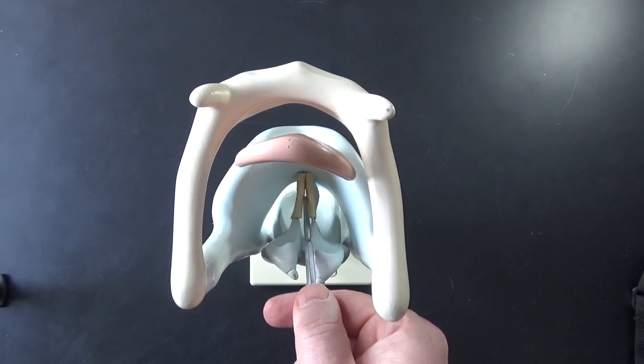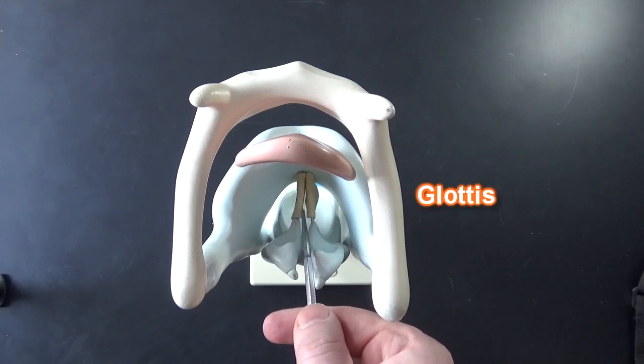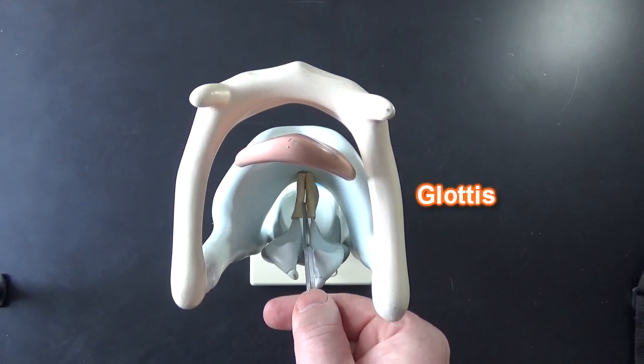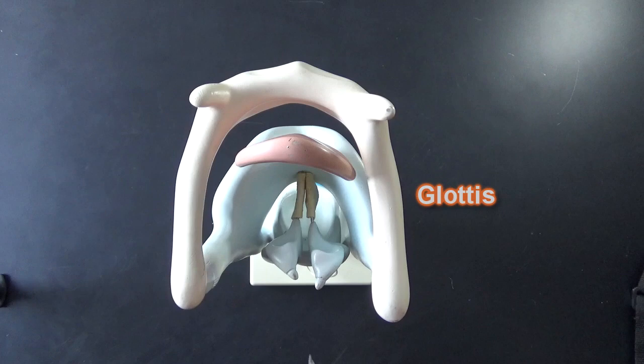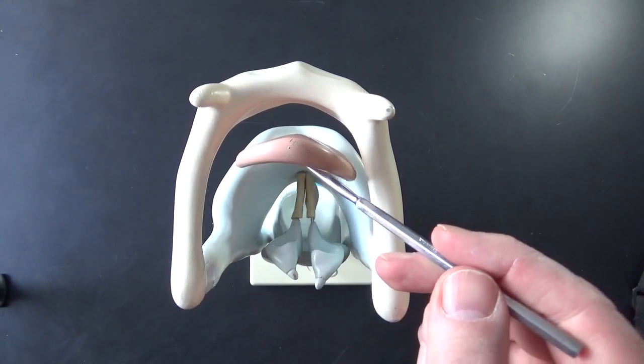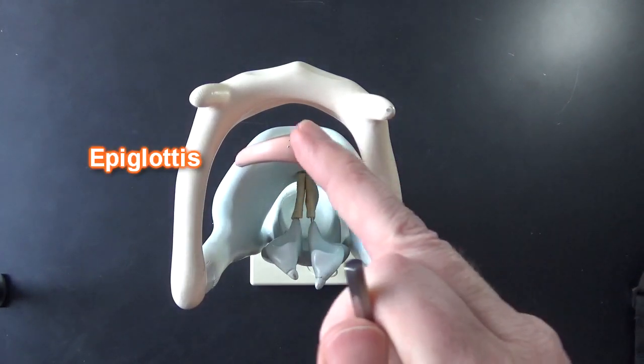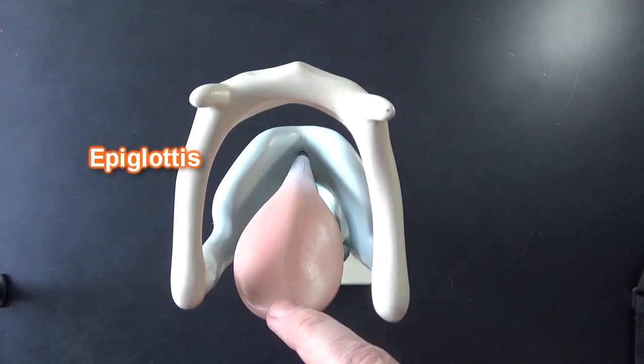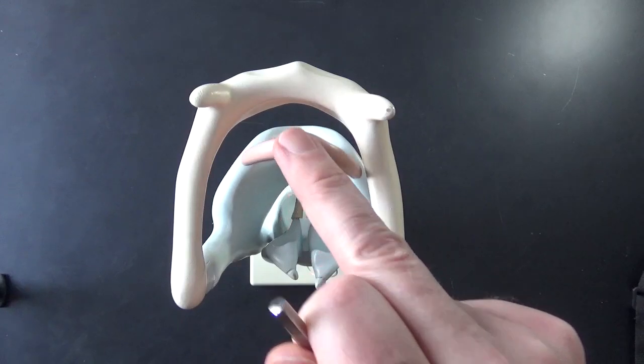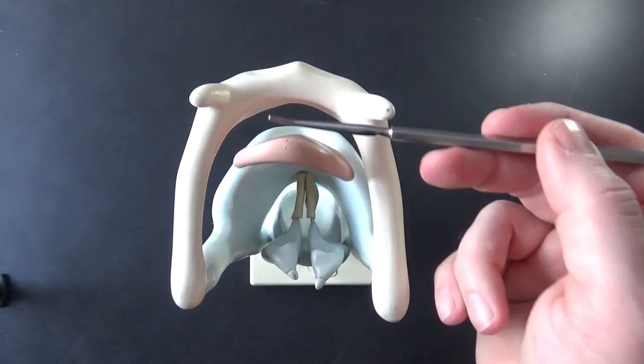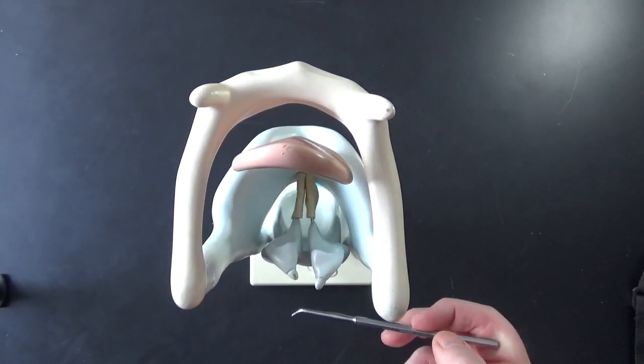Now there's a hole inside here called the glottis and that's the hole that leads into the trachea. Now this glottis is protected by the epiglottis right here. This epiglottis is going to deflect food away from the glottis so that food does not end up in the respiratory system. It'll bypass it and go into the esophagus back here.